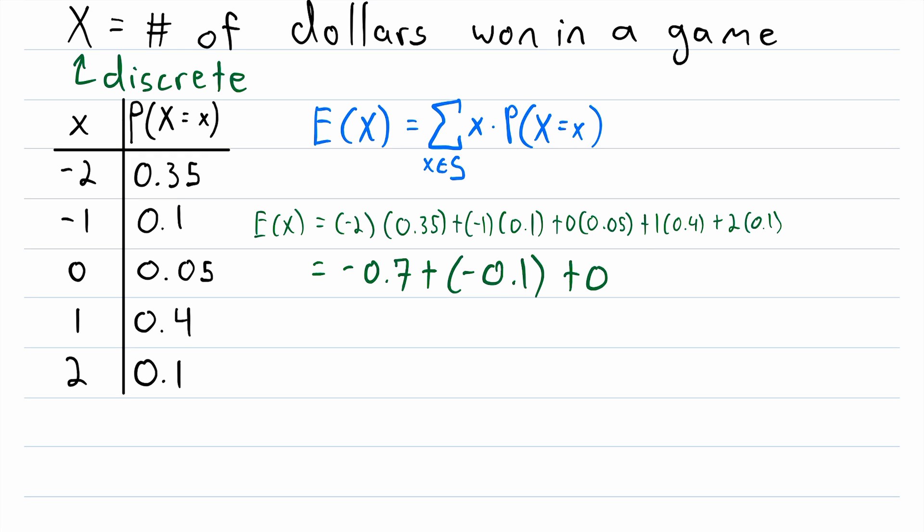Then we have plus 1 times 0.4, that's plus 0.4. And then we have plus 2 times 0.1, that's plus 0.2. And then this is easy enough to add up.